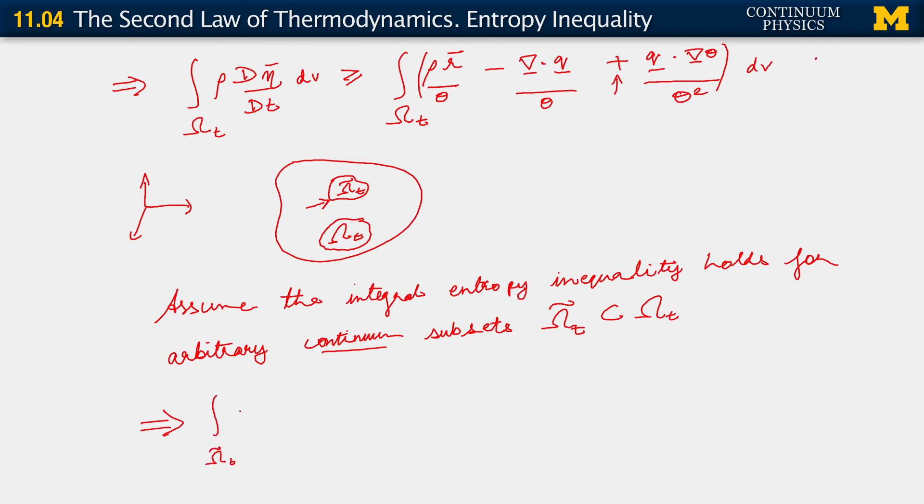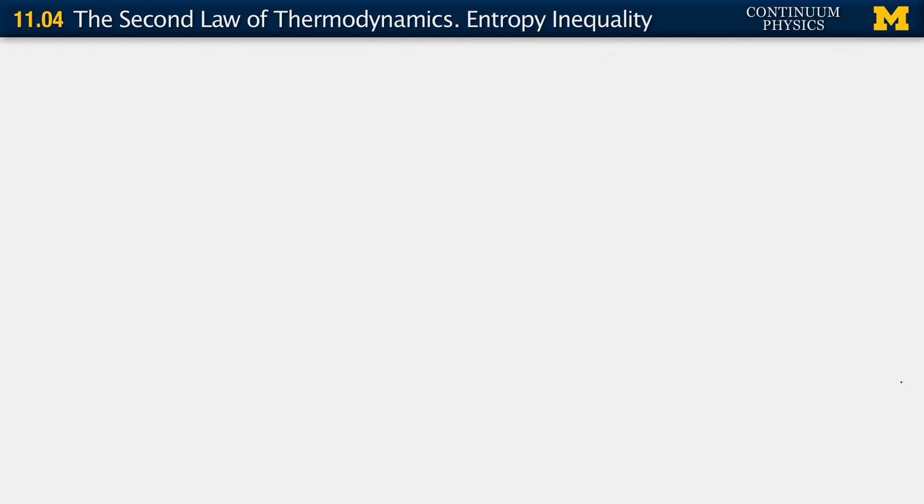Integral over omega t tilde, rho d eta bar d t dV is greater than or equal to integral over omega t tilde, rho r bar divided by theta minus divergence of q divided by theta plus q dot gradient theta divided by theta square dV, and that this holds for all omega t tilde subset of omega t. And then this gives us the point wise form of the entropy inequality.